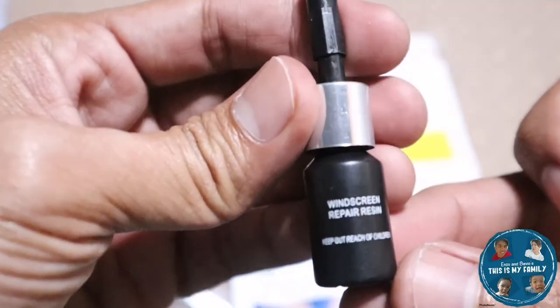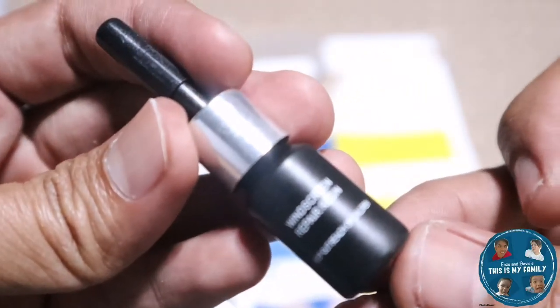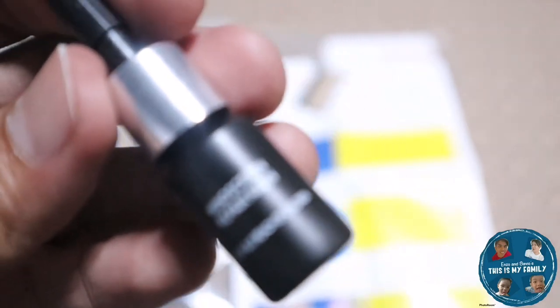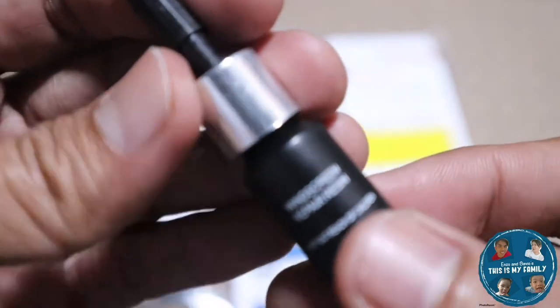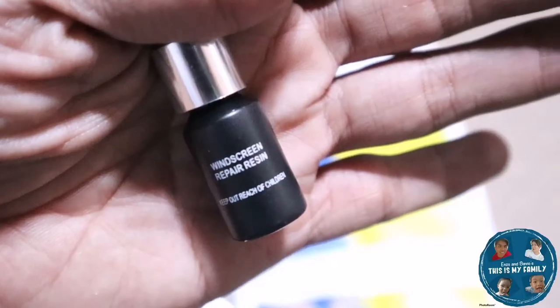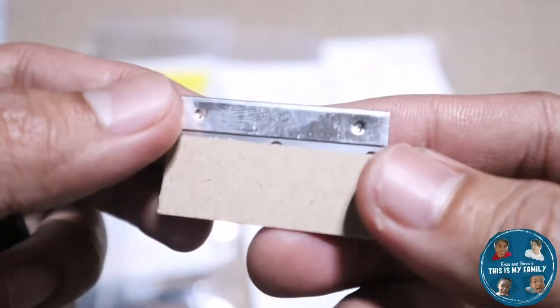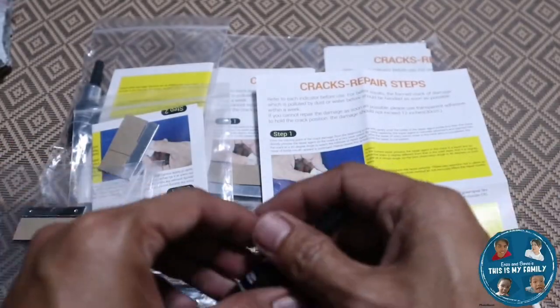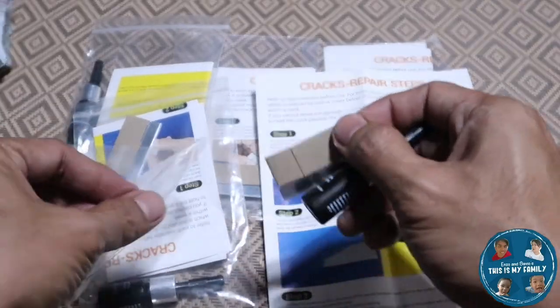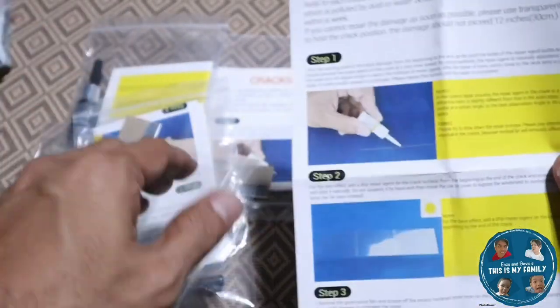Okay so this is the fluid, the nano fluid. So this thing uses the nanotechnology, so siguro the nanotechnology dahil maliit yun, the fluid will insert itself to the cracks of the mirror. So ayan, medyo malabo, the windshield repair resin, okay. And this is the blade, okay this will come handy later.